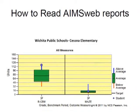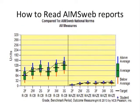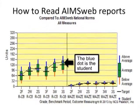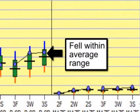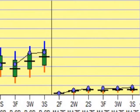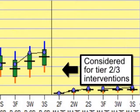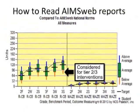Let's take another look at how to interpret this information. The blue dot is where the student scored on the assessment — this particular student fell within the average range. The blue line on the graph represents a student that is performing above average and would be considered for enrichment.